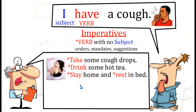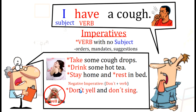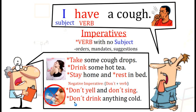Sometimes we give a suggestion or an order and it's a negative imperative. For the negative imperative, we use 'don't' for all types of sentences plus the verb. For example, Dr. White says 'Don't yell and don't sing.' When you have a cough, it's important: don't yell and don't sing. Another example of the negative imperative: 'Don't drink anything cold.'